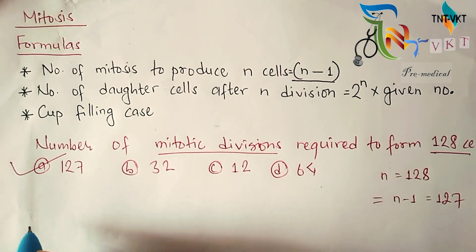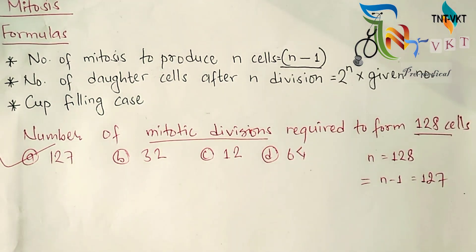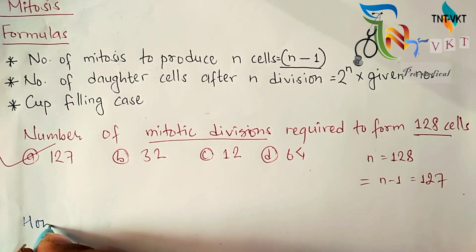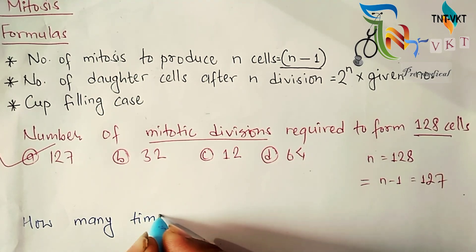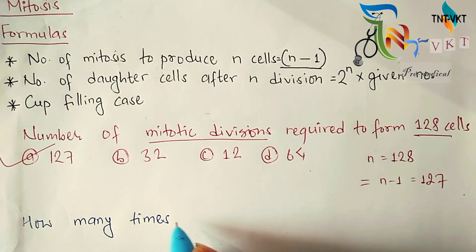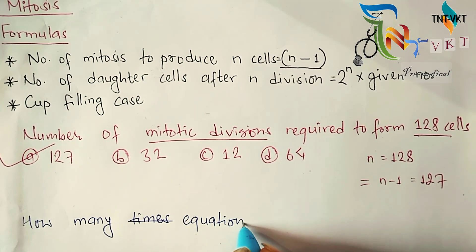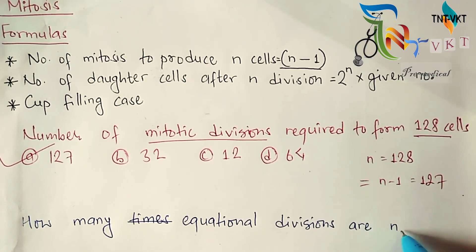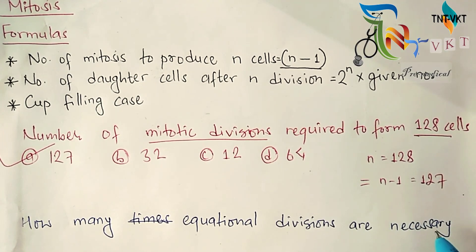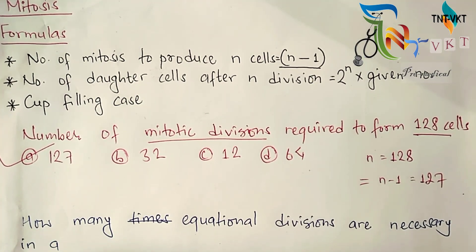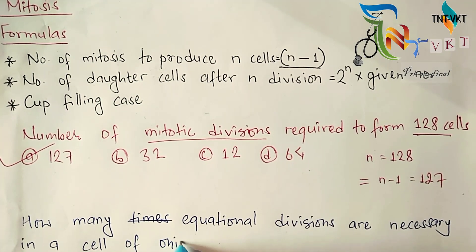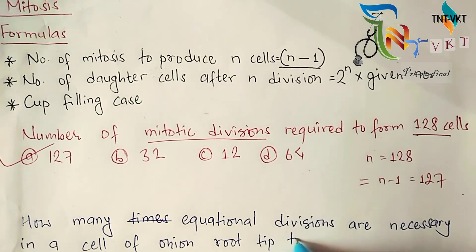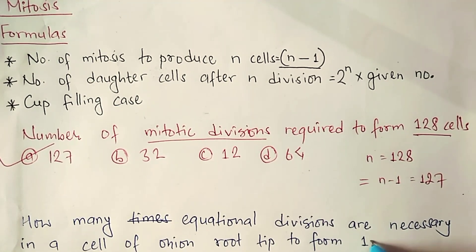Now let's look at a slightly more difficult question: How many equational divisions are necessary in a cell of onion root tip to form 128 cells?